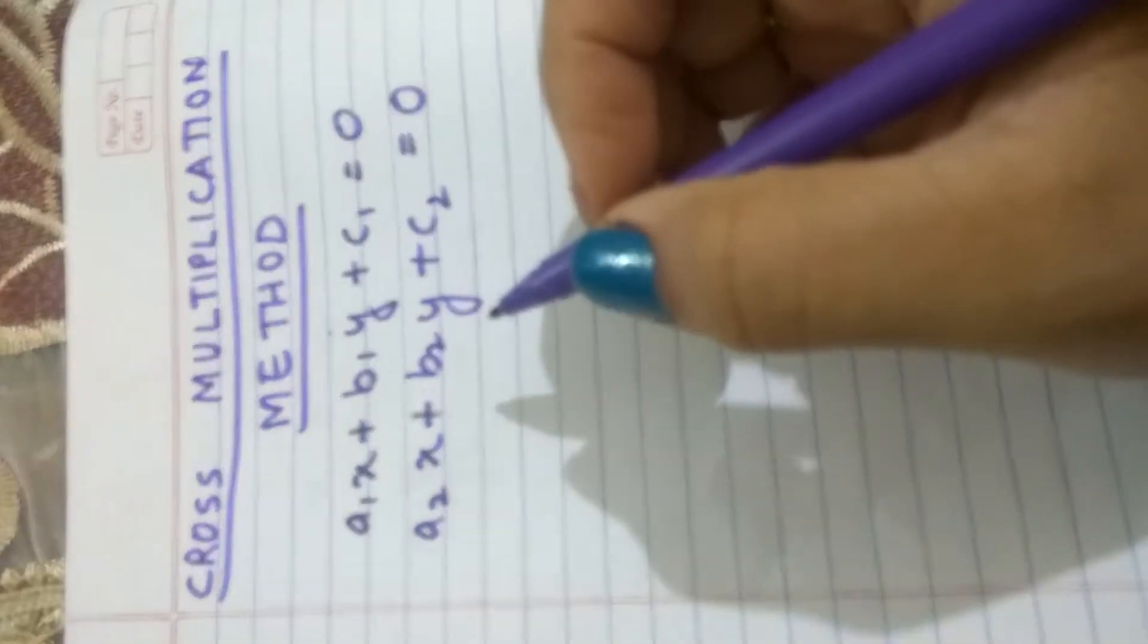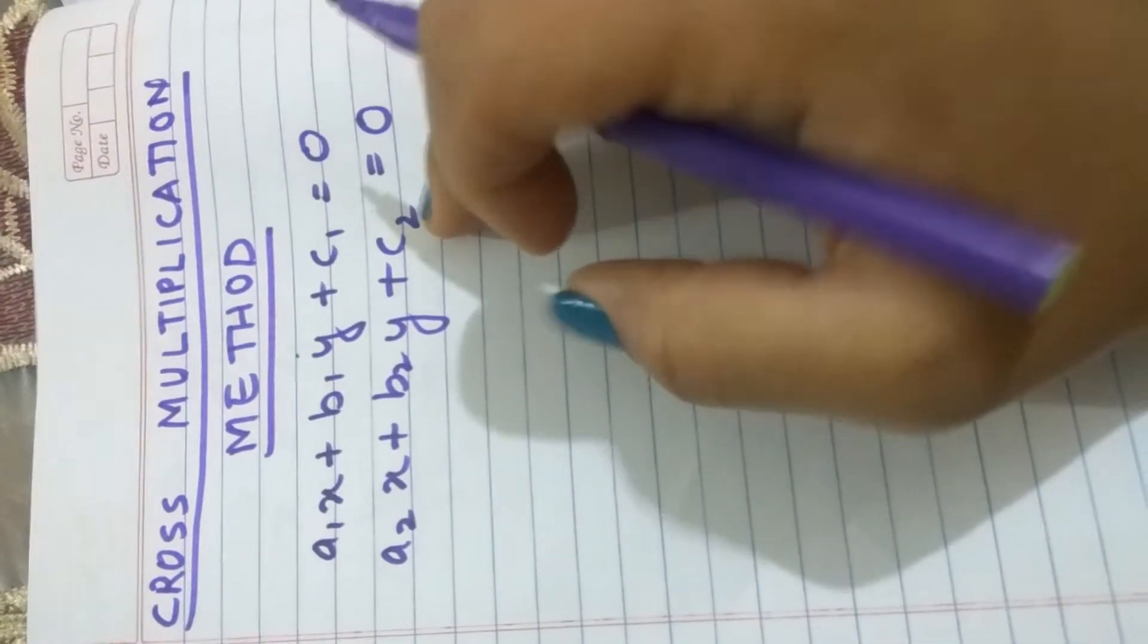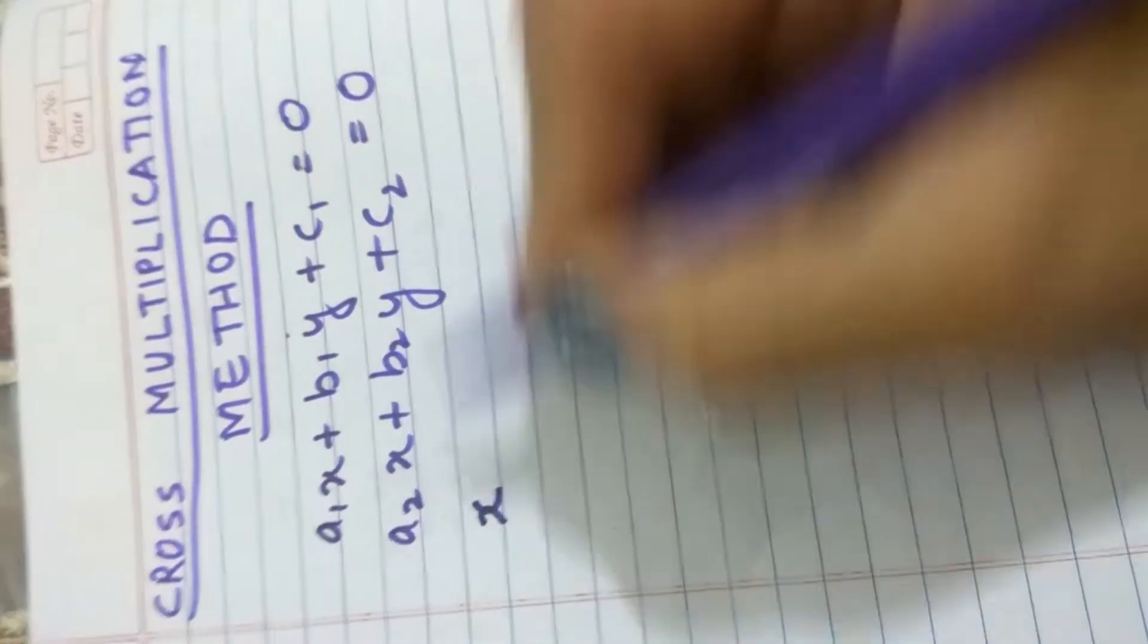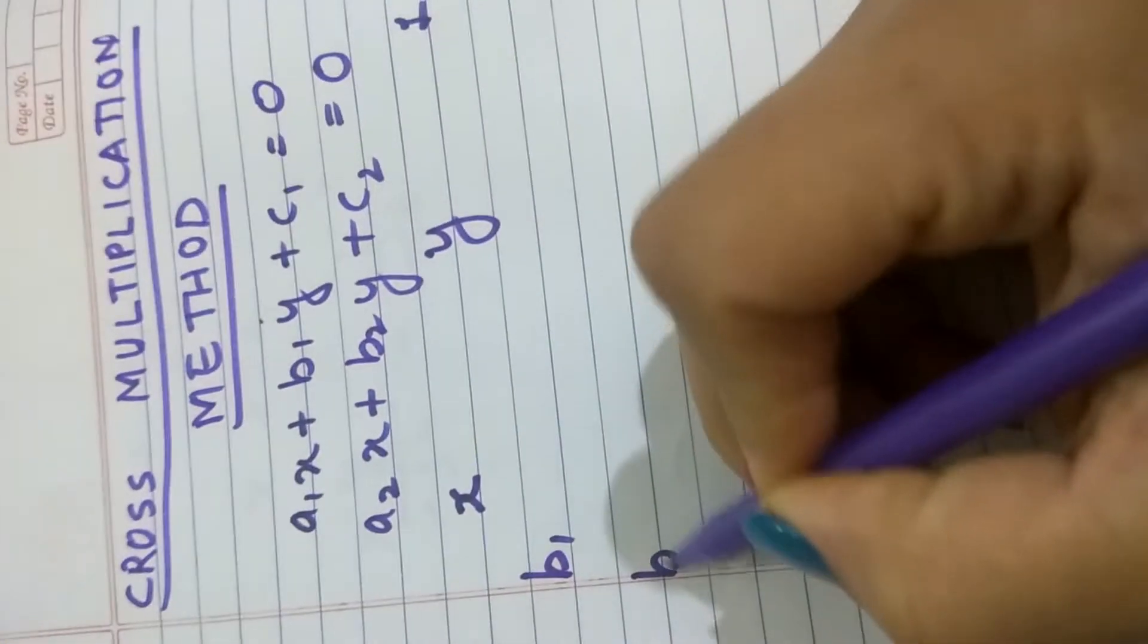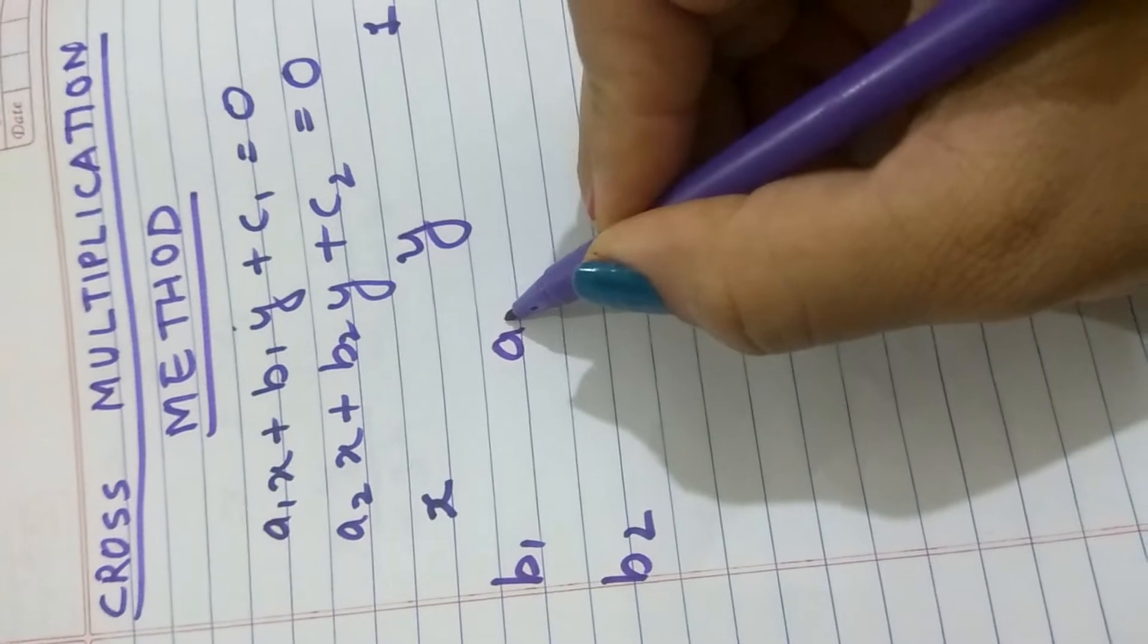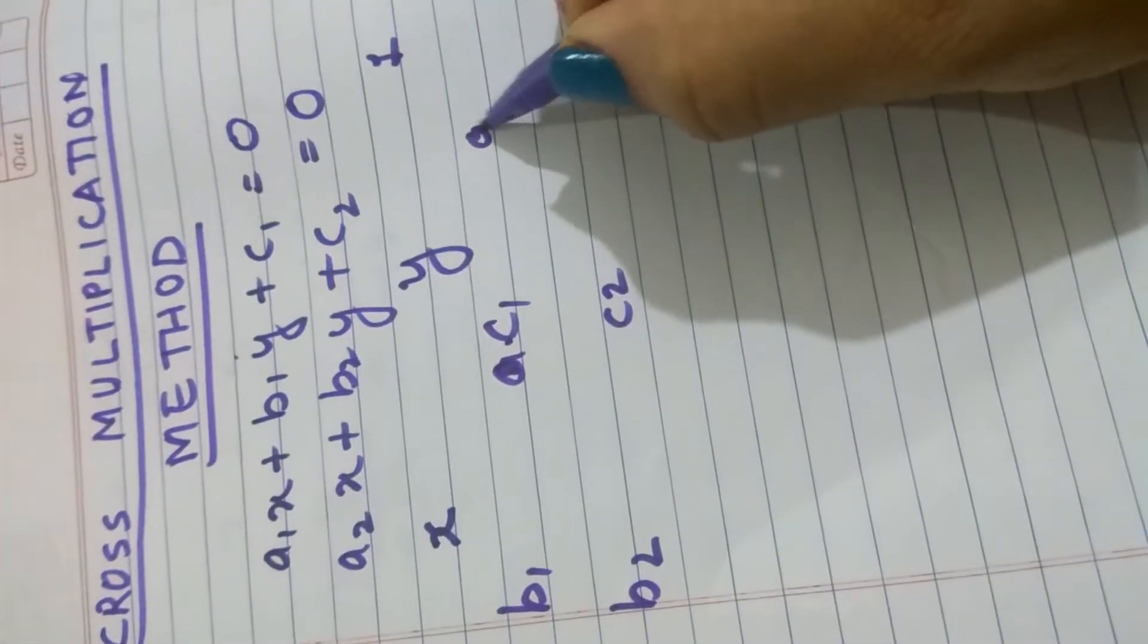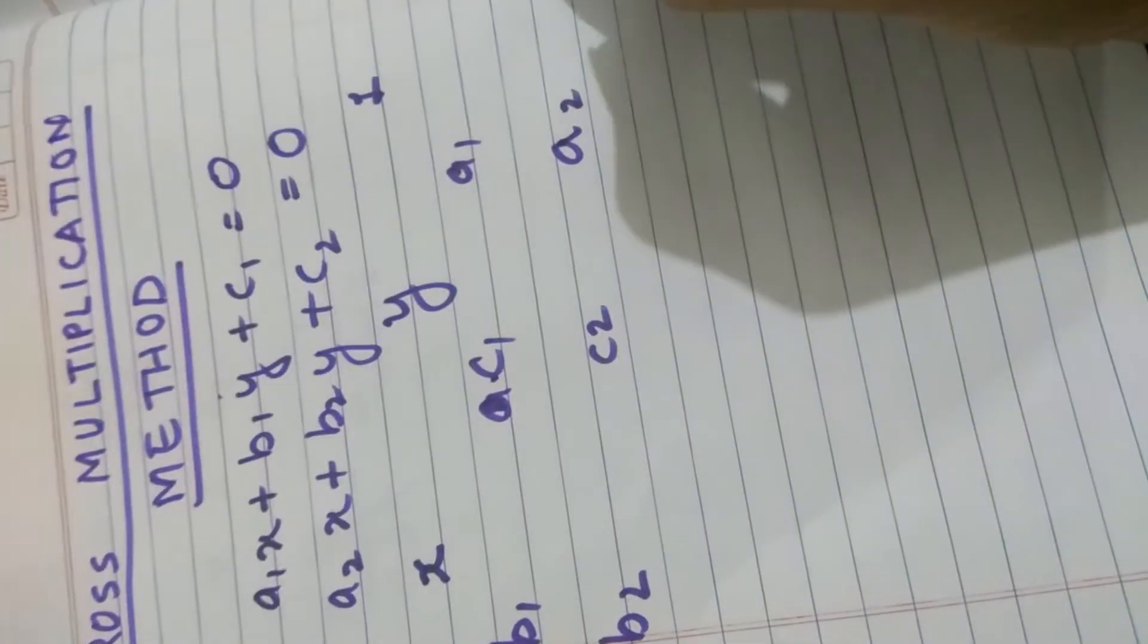For cross multiplication method, first thing is that we have to write the equations in standard form like this. After that, we will write them in a certain pattern. We will take these two coefficients, then c1, c2, a1, a2, and at the end again b1, b2.